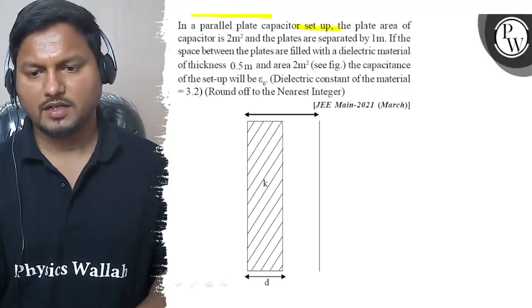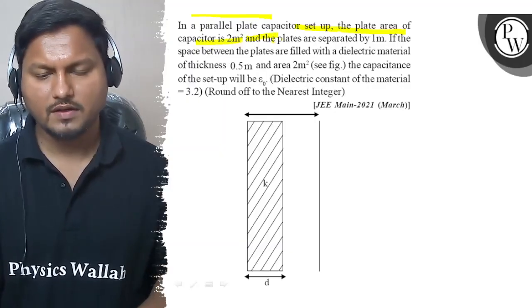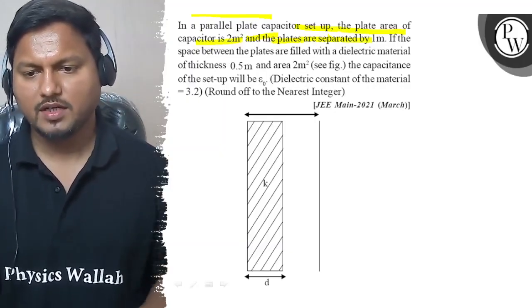In a parallel plate capacitor setup, the area of the capacitor is 2 m² and the plates are separated by 1 cm.